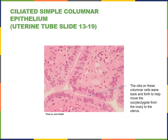Another example of a simple columnar epithelium is the uterine tubes, or fallopian tubes, attached to the uterus. They carry the oocyte, which becomes an ovum and then a zygote during fertilization, traveling through the uterine tube into the uterus to implant and develop into a fetus. The uterine tube has a ciliated simple columnar epithelium, meaning the apical surface has cilia that beat back and forth to move mucus along the surface, helping with movement of the oocyte or zygote through the tube.